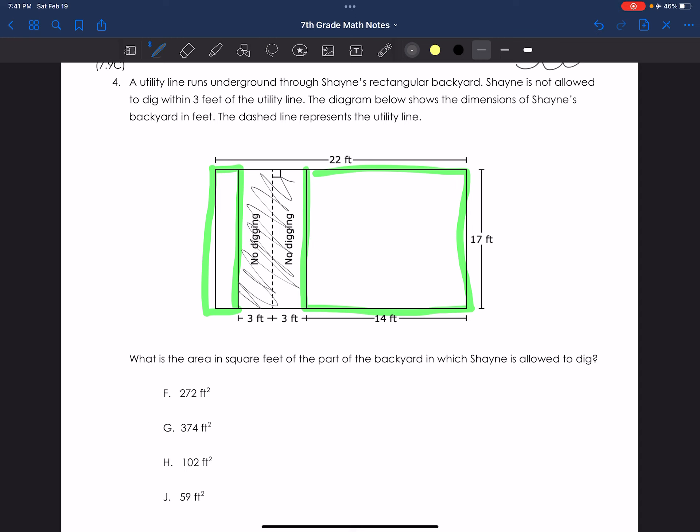So I am missing this little piece on the other side of my 3 feet, but I know the entire thing is 22, and 6 plus 14 equals 20, therefore this little guy is 2 feet.